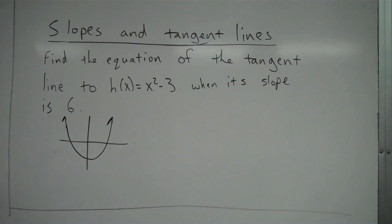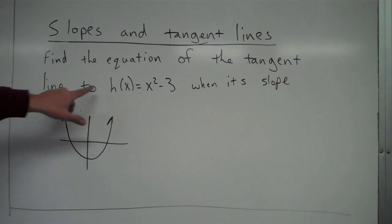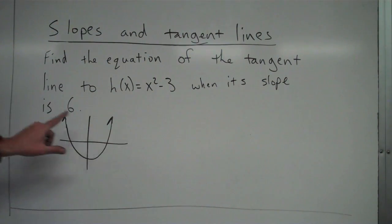So we're trying to find the equation of the tangent line to this function when its slope is 6. And when its slope, I could have probably written this question a little better, but we could be referring to either the function or the tangent line because at the point of tangency, the tangent line shares the same slope as the function.